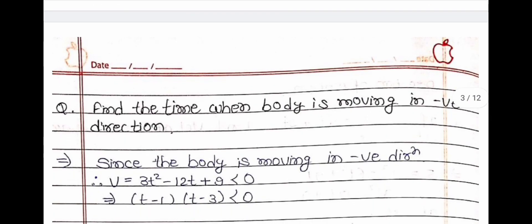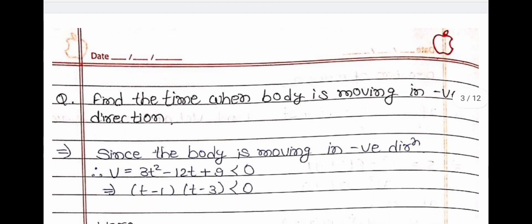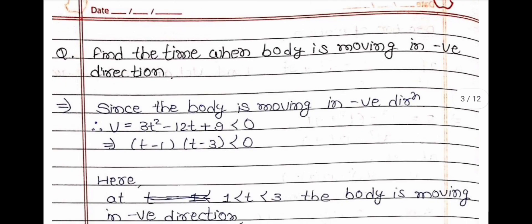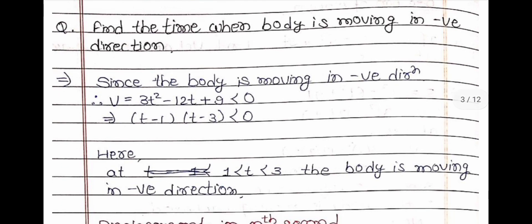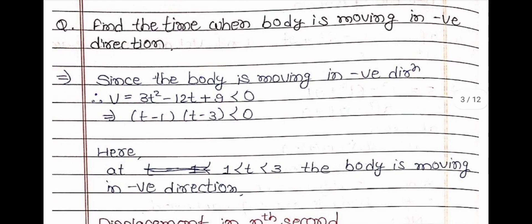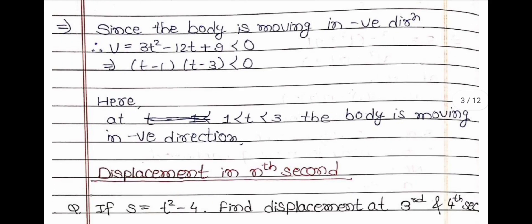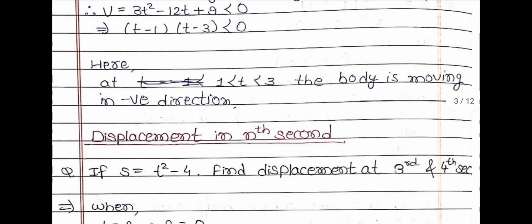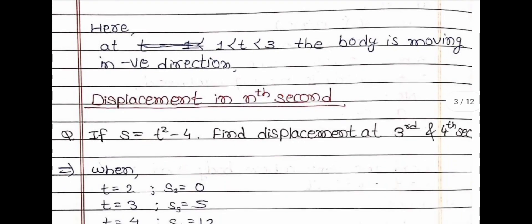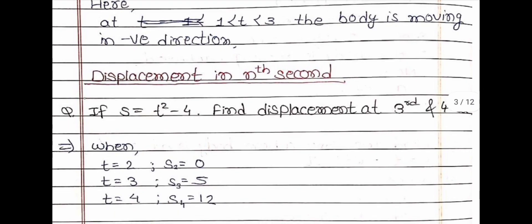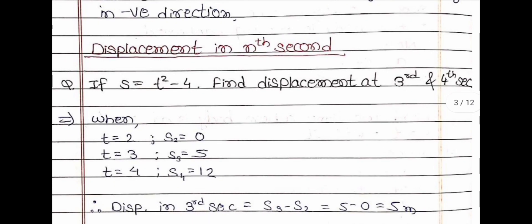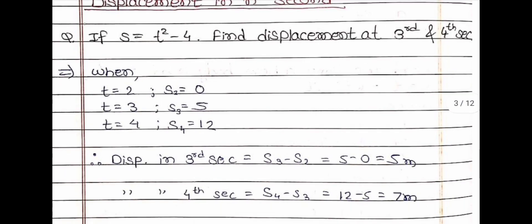Now let us come to another question: find the time when the body is moving in the negative direction. It is a very simple question; you must try to do it yourself. Next topic is displacement in the nth second. If s = t² − 4, find the displacement at the 3rd and 4th second. The solution is here.